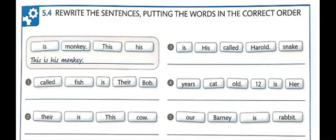Let me play the example first. 'This is his monkey.' Number 1: Their fish is called Bob. Number 2: This is their cow. Number 3: His snake is called Harold. Number 4: Her cat is 12 years old. And number 5: Barney is a rabbit. How'd you do?